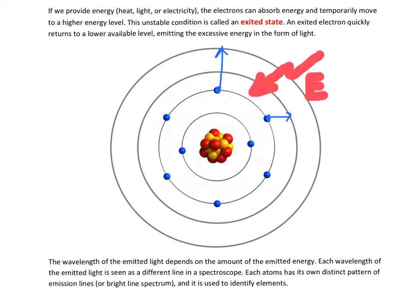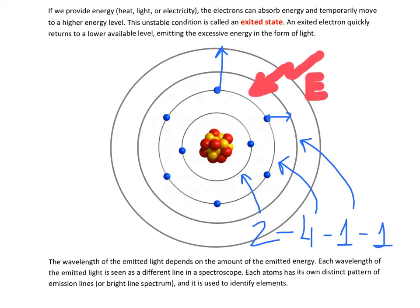If I write the electron configuration for this atom in its excited state, it would look like this: two for the number of electrons on the first level, four for the number of electrons on the second level, one for the number of electrons on the third level, and one for the number of electrons on the fourth level.